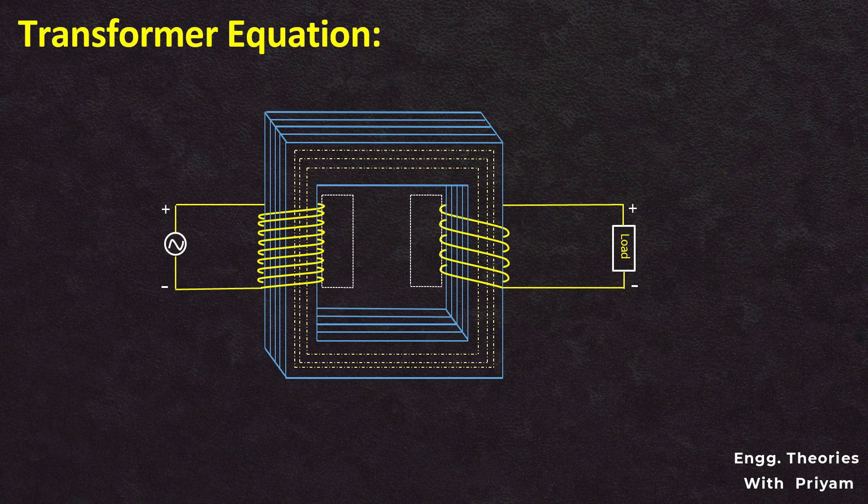In this lecture of the transformer, we will derive the equation of the transformer. A transformer has two sides: the primary side and the secondary side.